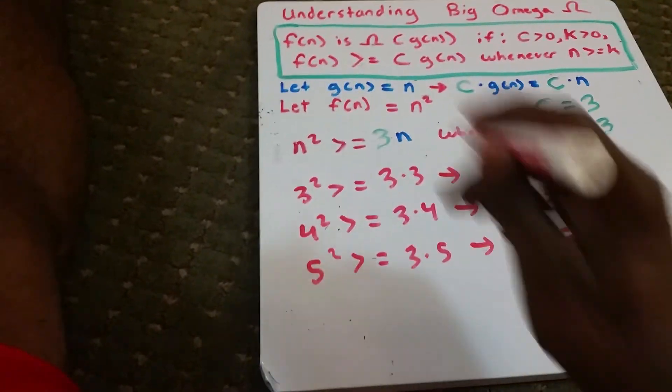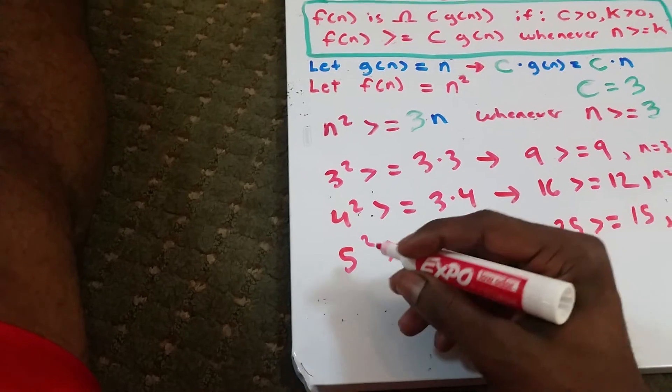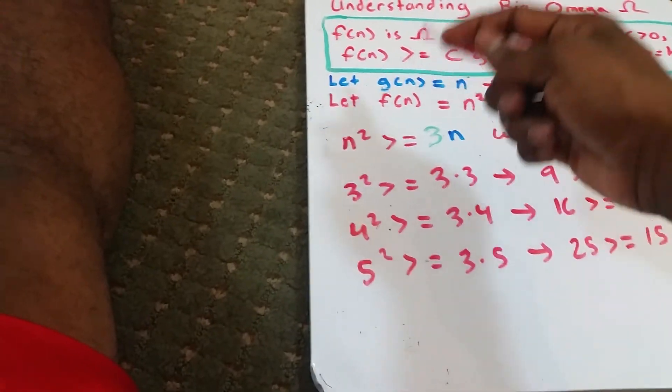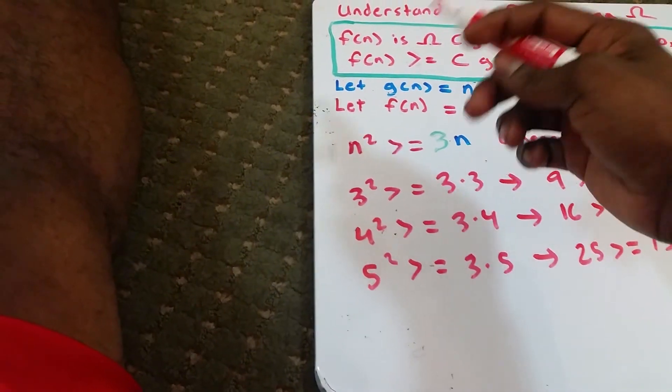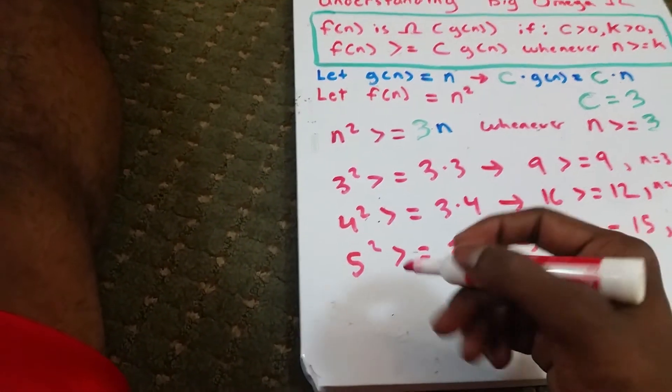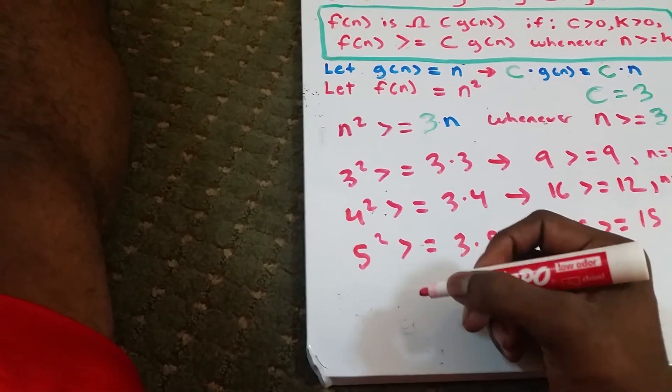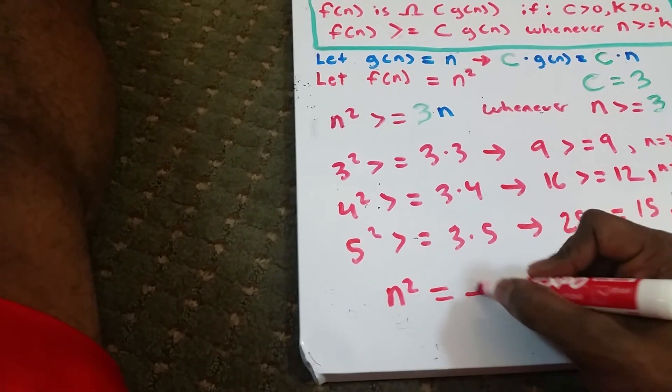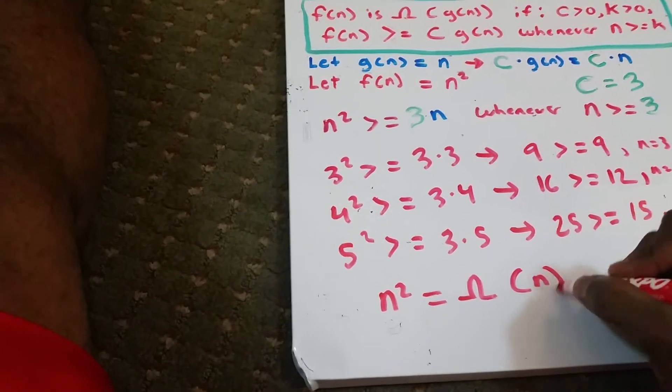Therefore, f of n belongs to or is Big Omega of g of n. So we have n squared is Big Omega of n.